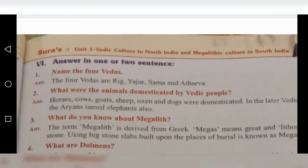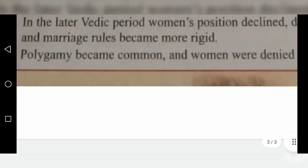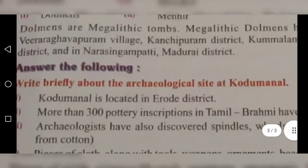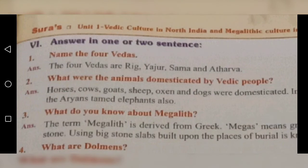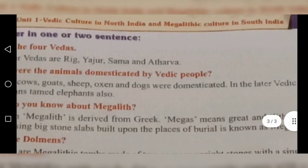Answer in one or two sentences. First question: Name the four Vedas. The four Vedas are Rig, Yajur, Sama, and Atharva. Second question: What were the animals domesticated by Vedic people? Horses, cows, goats, sheep, oxen, and dogs were domesticated.